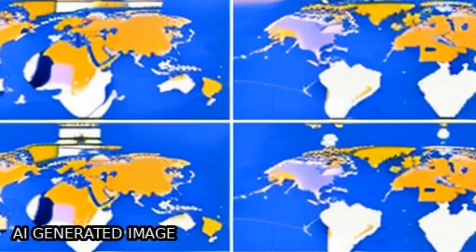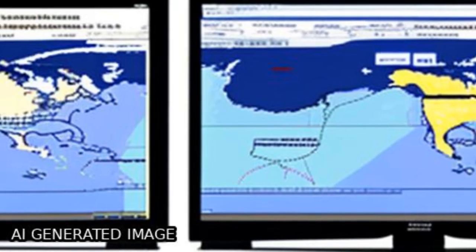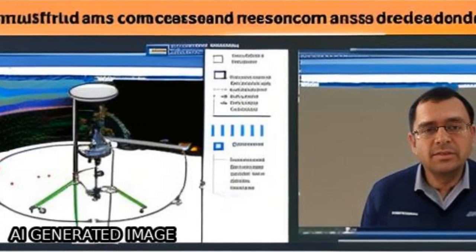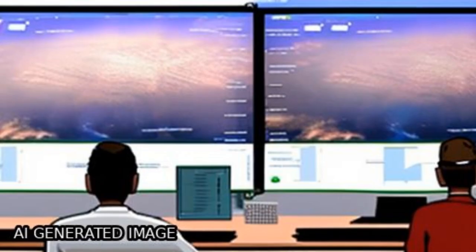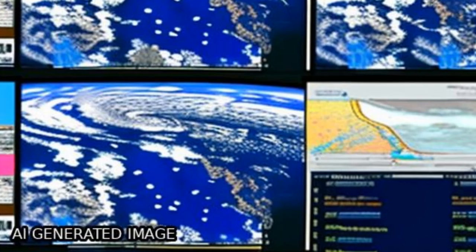We present Multi-Source Weighted Ensemble Precipitation, MSWEP version 1.1, a global precipitation data set for the period 1979-2015 with a 3-hourly temporal and 0.25 degrees spatial resolution.